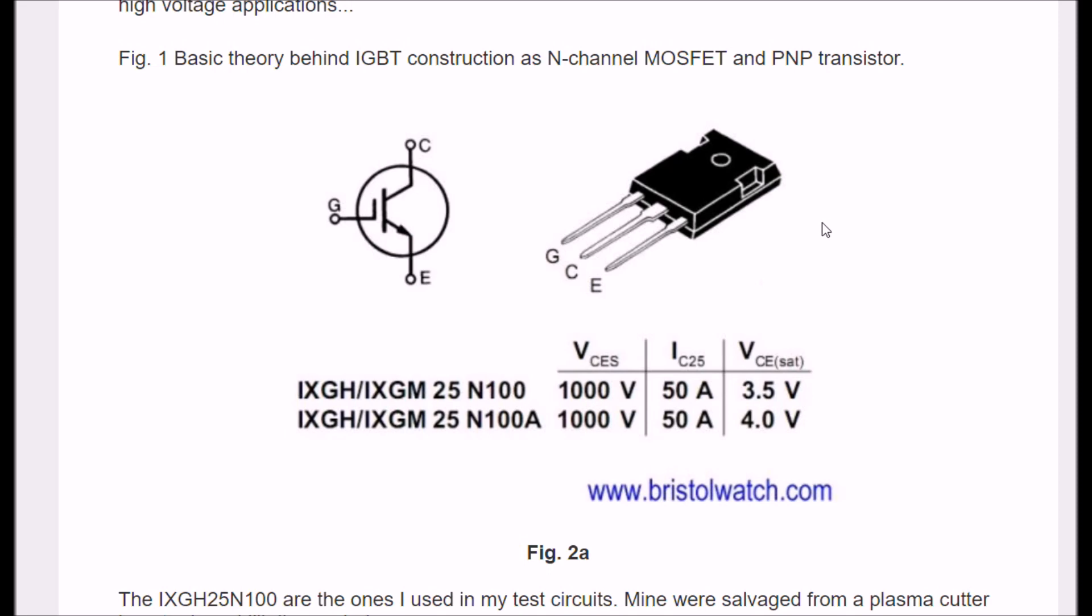The ones I was using are at least 20 years old. There's been some improvements. But these things handle an amazing 1000 volts at 50 amps. And this is a characteristic you must be aware of: the voltage collector emitter saturation was 3.5 volts. That's one of the characteristics you're looking for is a low VCE SAT. Notice one thing, though. This particular unit has no internal flywheel diodes.